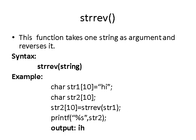The strrev() function is used to reverse a given string. The syntax is strrev(string). For example, with str1 initialized to 'hi', str2 = strrev(str1) will reverse 'hi' to 'ih', stored in str2. When printed, str2 shows 'ih'. This function can be used to check if a given string is a palindrome.